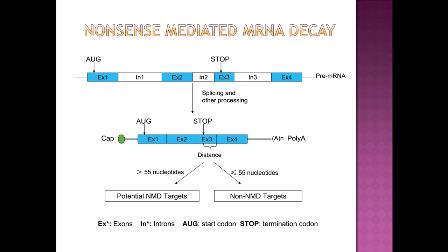Nonsense-mediated messenger RNA decay is a messenger RNA surveillance pathway which actively ensures the rapid degradation of messenger RNAs containing premature translation termination codons.